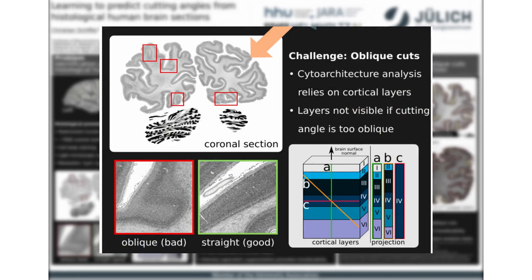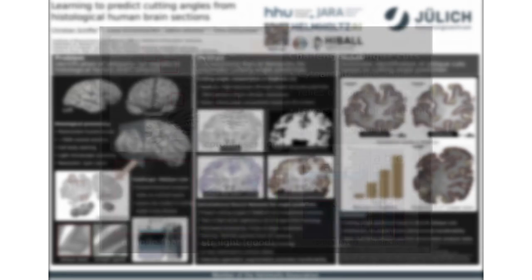One important task is the analysis of cytoarchitecture, which relies on the visibility of cortical layers. However, cortical layers cannot be recognized within the 2D image plane if the angle between the cutting plane and the brain surface normal is too oblique. We aim to automatically identify such obliquely cut regions to exclude them from subsequent analysis tasks.